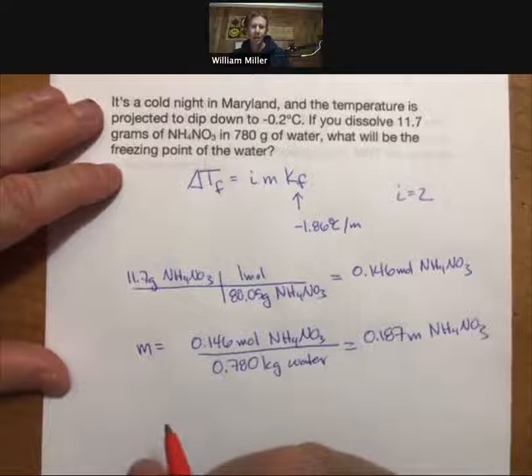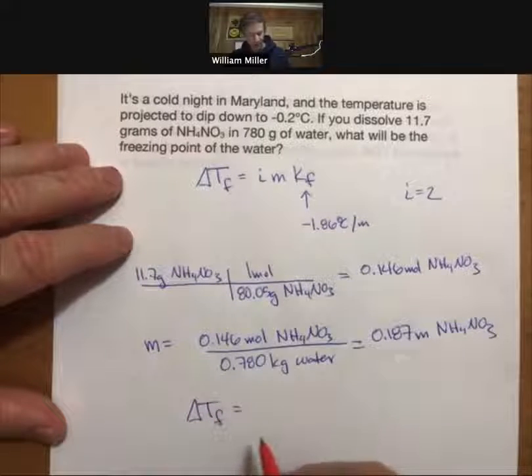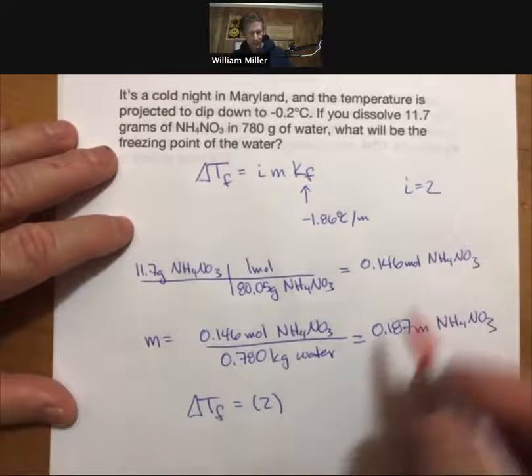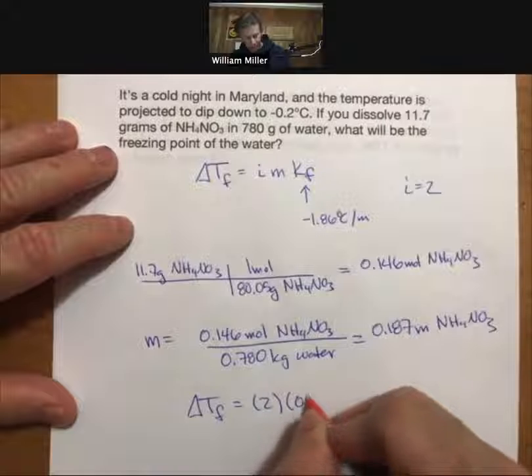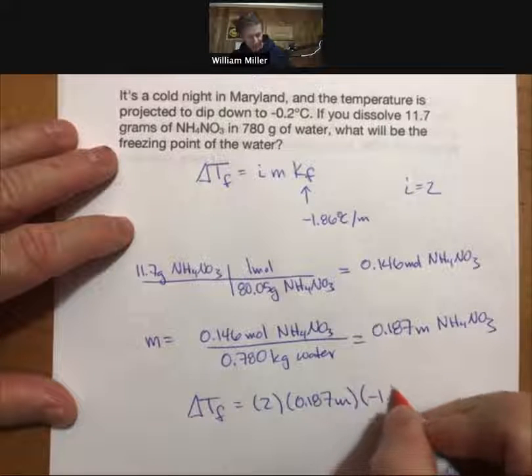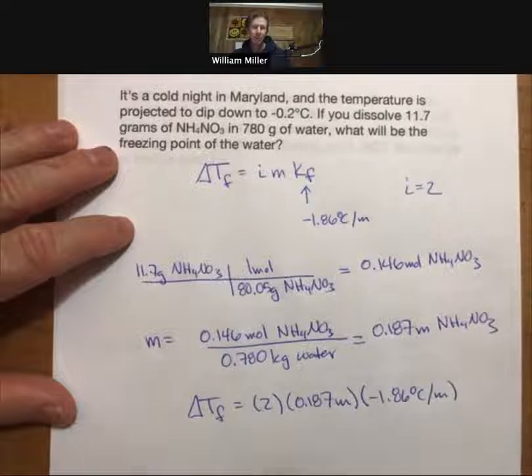And we're finally ready to plug back in. Delta Tf, our freezing point depression, it's going to be our Van't Hoff i factor, which is two times 0.187 molal times minus 1.86 degrees Celsius per molal.